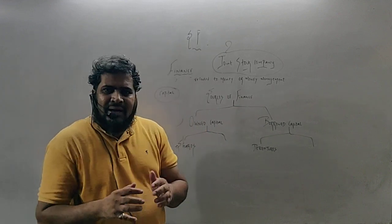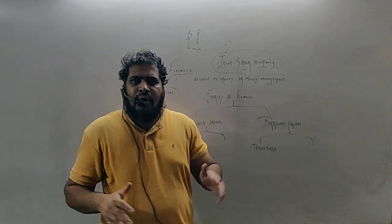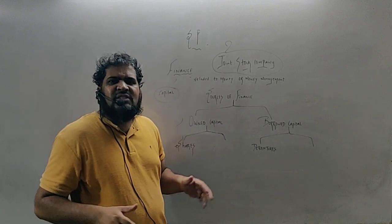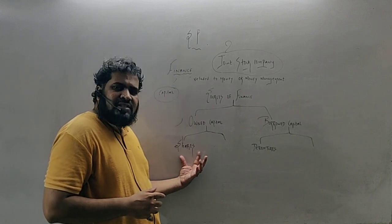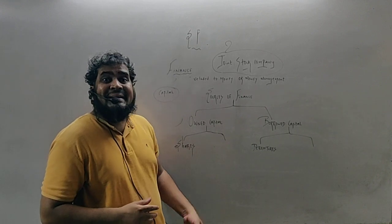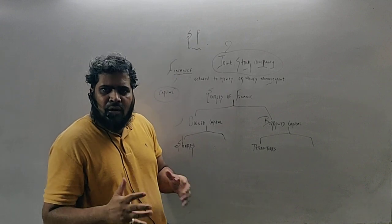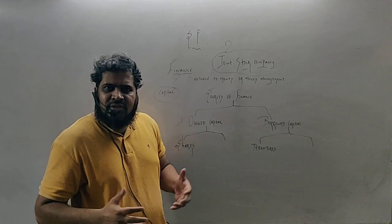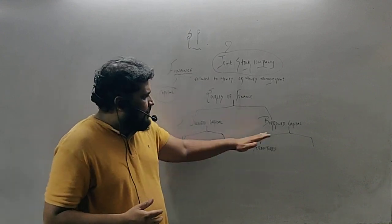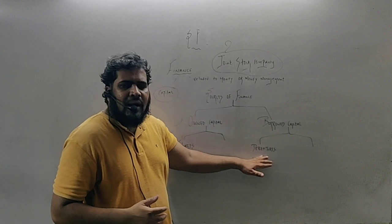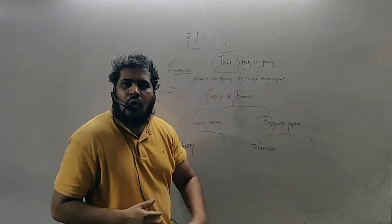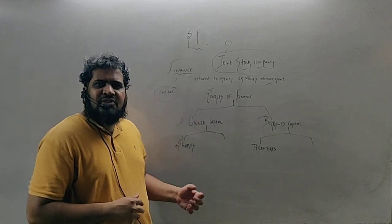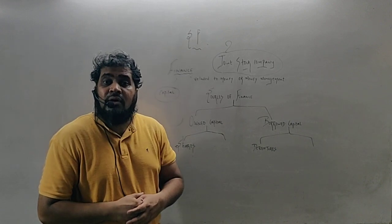So, this is owned capital and this is borrowed capital. Understood? Owned capital. The diagram is being continued forward. In owned capital, you have different sources. The first source is shares. There are others also, retained earnings and all. But it is not possible in a small video to cover the entire concepts. If you want to cover the concept, join Success Commerce Academy, we are ready to serve you. And in borrowed capital, you are having debentures, you are having bonds and so on. Understood? In today's video, I am just going to focus on the concept of shares.